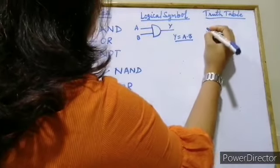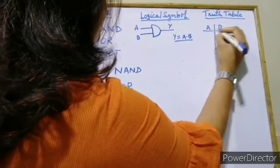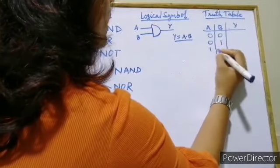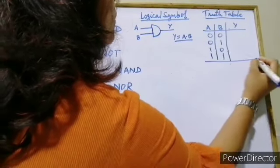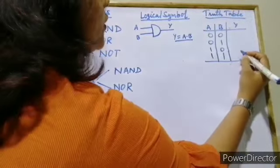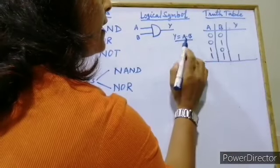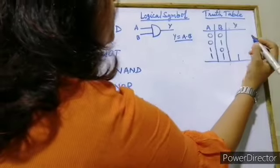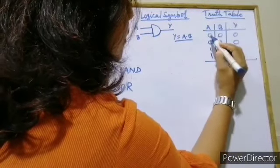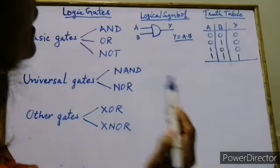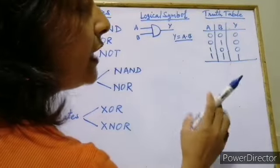Now we will see the truth table with inputs A and B and 1 output. The combinations are: 0,0 → 0; 0,1 → 0; 1,0 → 0; 1,1 → 1. Since it acts as multiplication, 0×0=0, 0×1=0, 1×0=0. So in case of the AND gate, the output will be true if and only if both the input values are true.